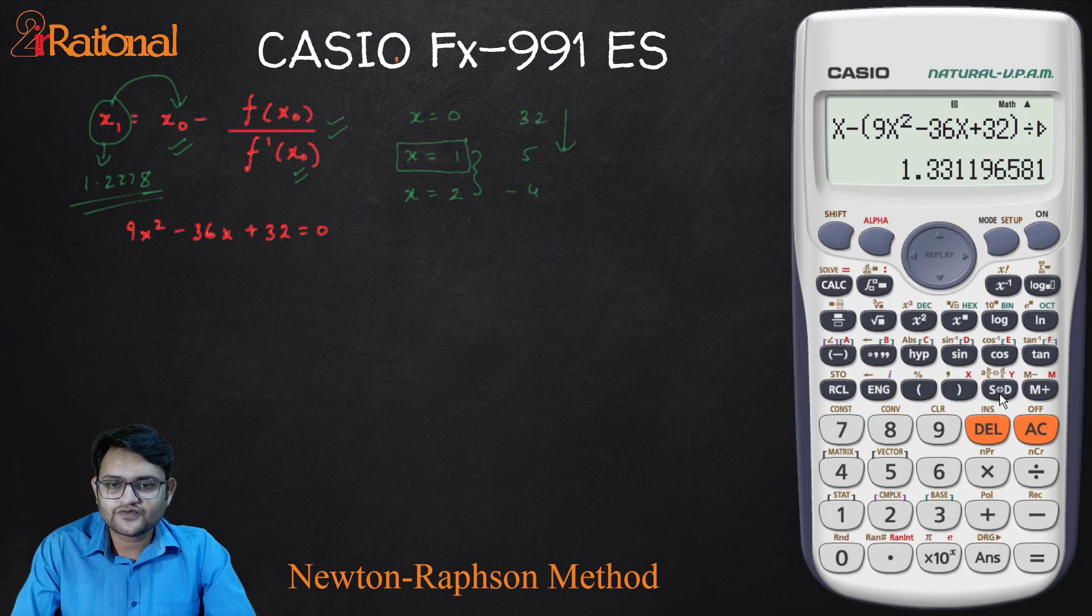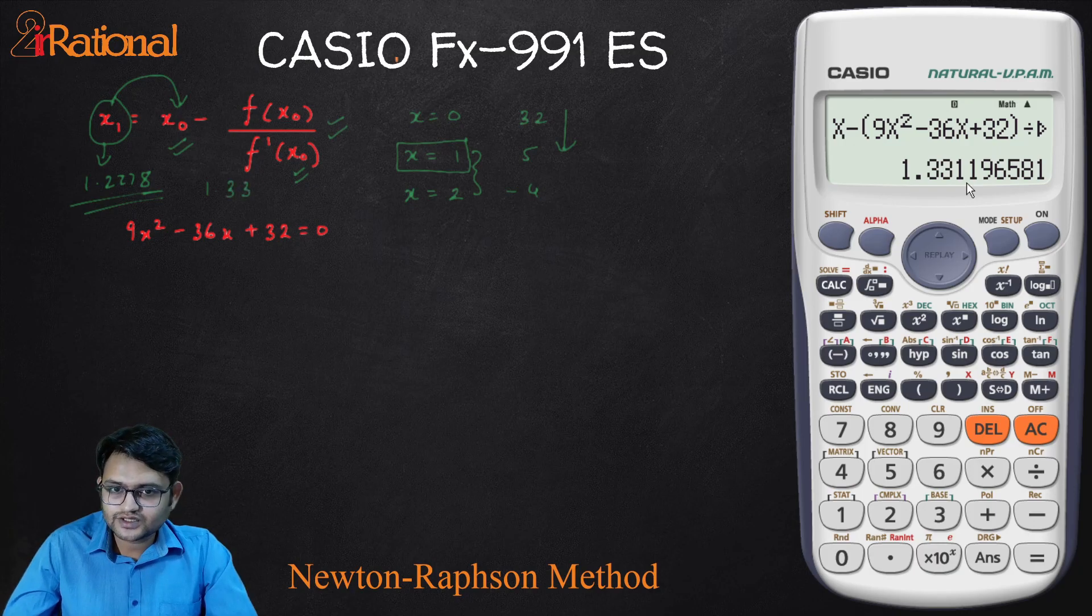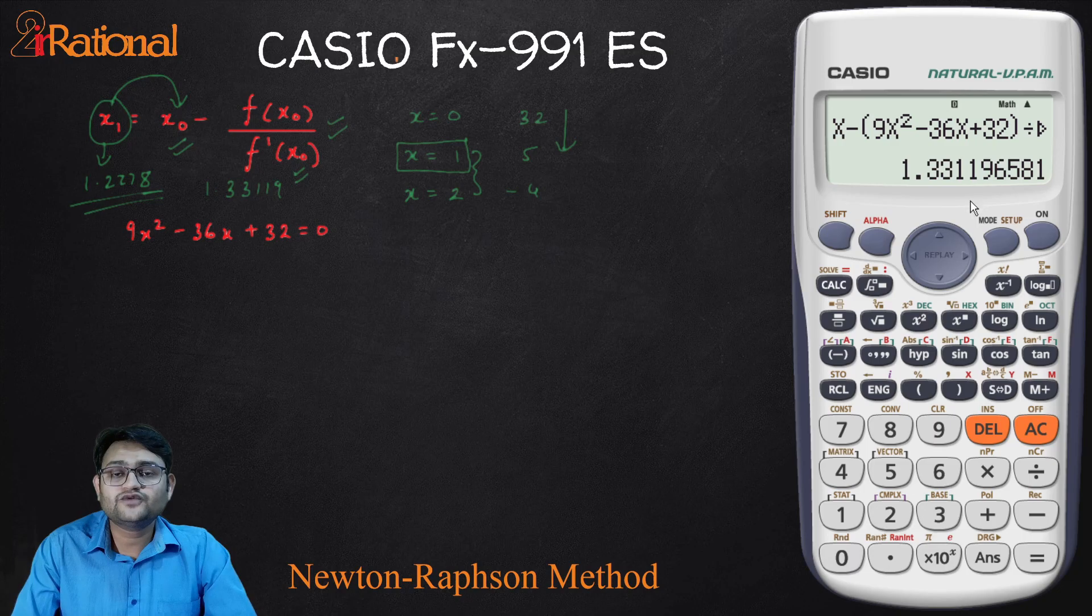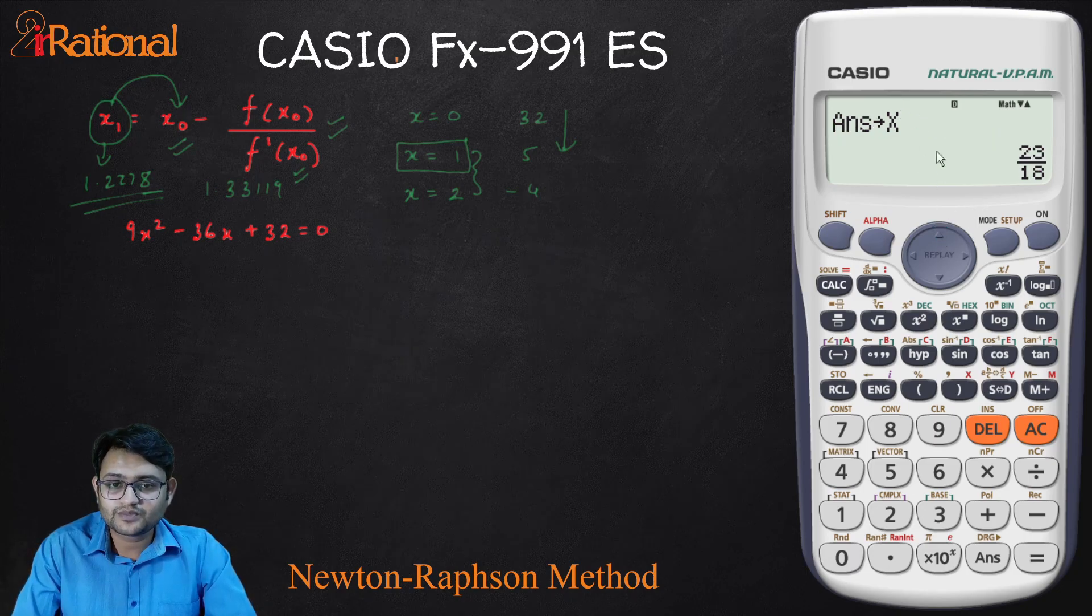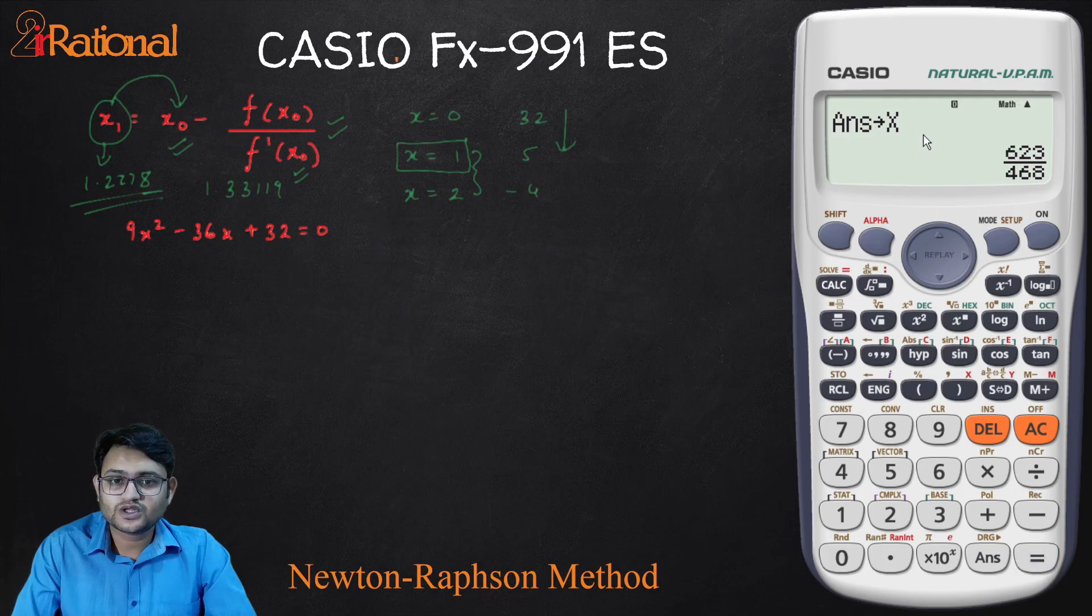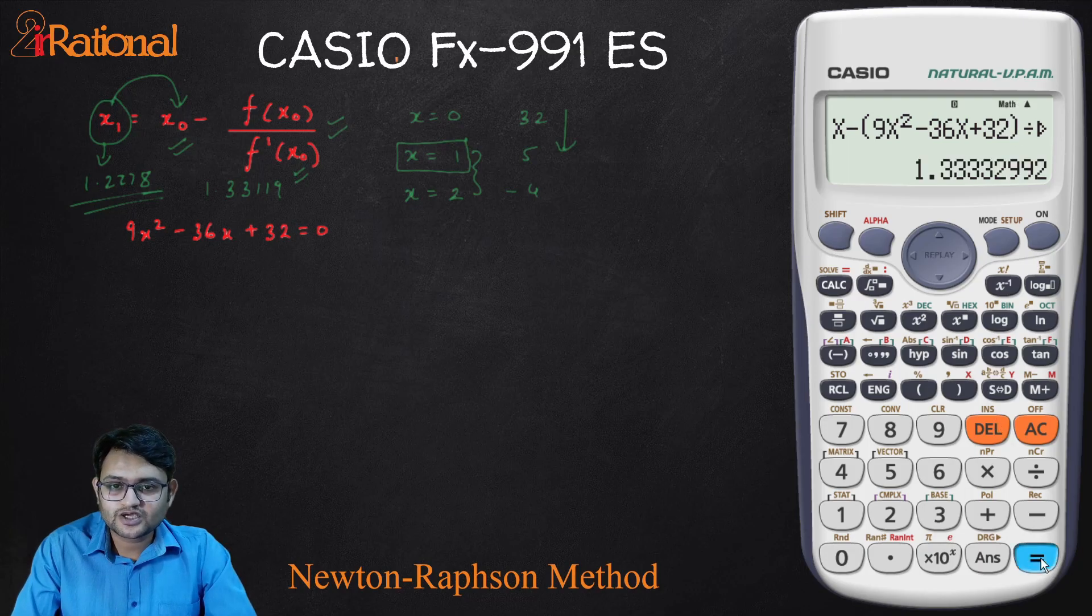This is my next iterative value. That is 1.33. Next iterative value is 1.33119. Now I don't have to do anything else. To find the next iterative value, I can go up, press equal to. Now this answer has been stored in x. Then go up, find the equation, press equal to and I get 1.333.